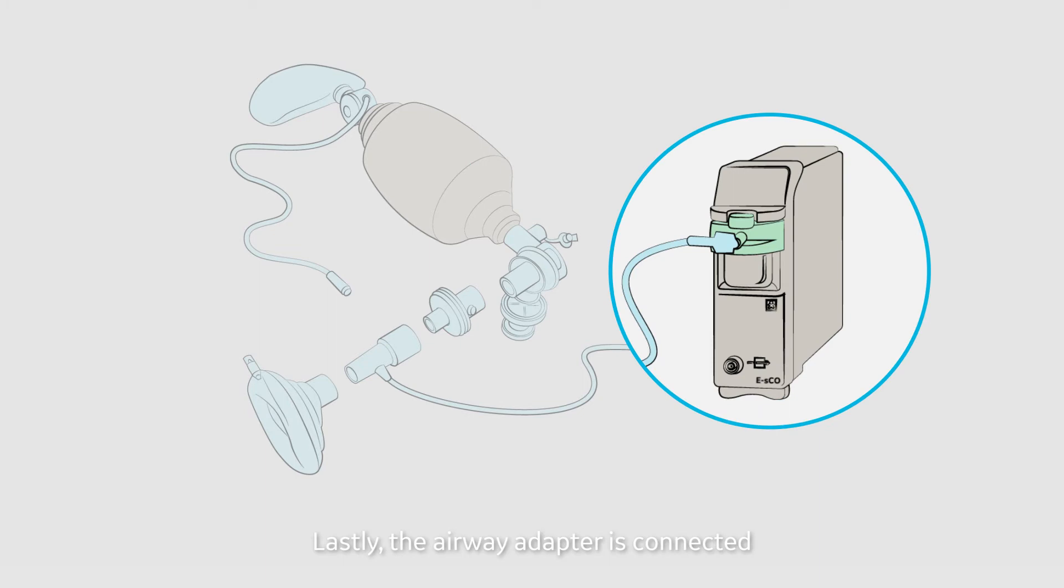Lastly, the airway adapter is connected to the ESCO module via the gas sampling line that provides continuous information on airway gases used during pre-oxygenation.